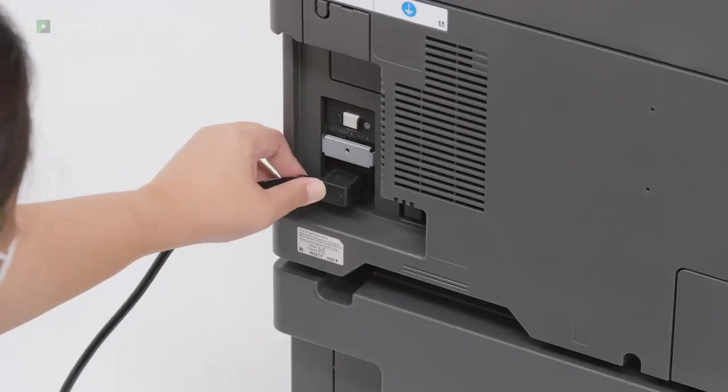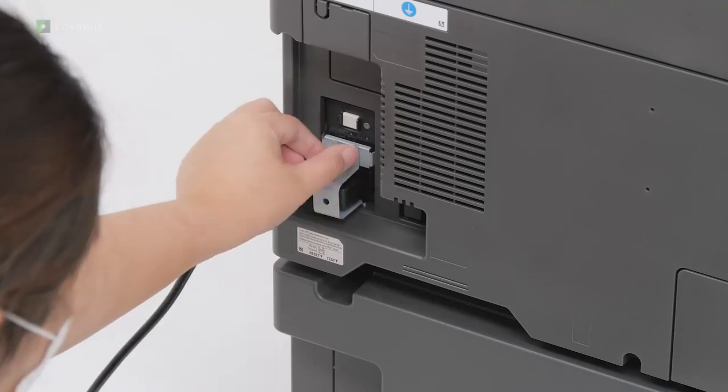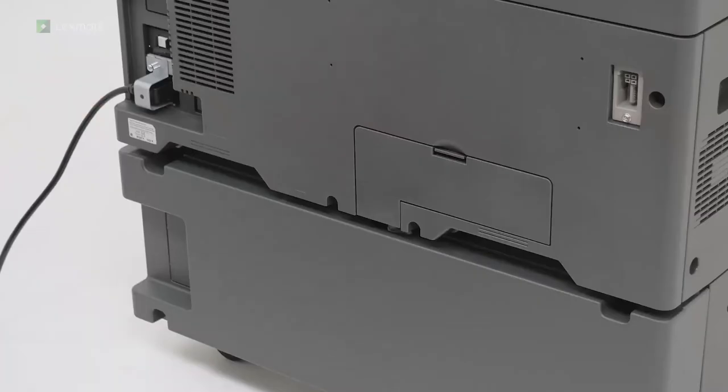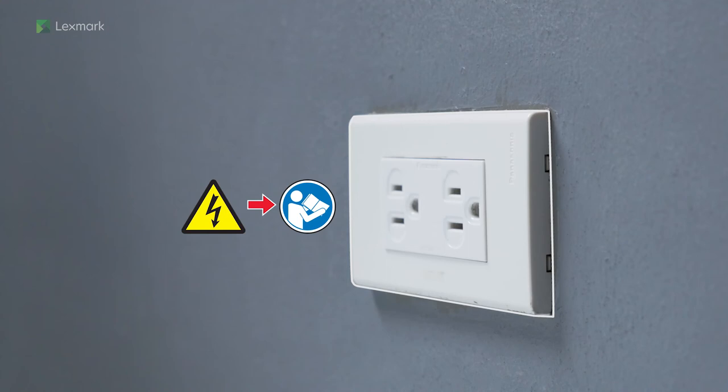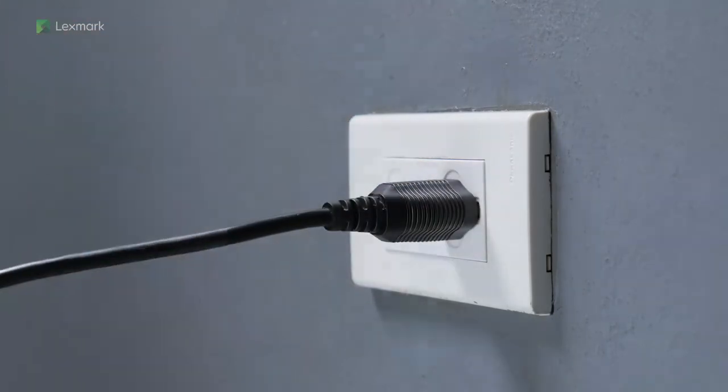Connect one end of the power cord to the printer. To avoid the risk of fire or electrical shock, connect the other end of the power cord to an appropriately rated and properly grounded electrical outlet.